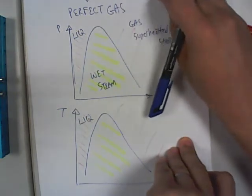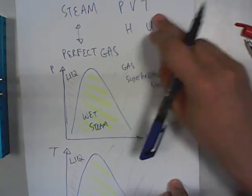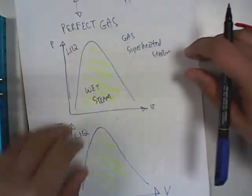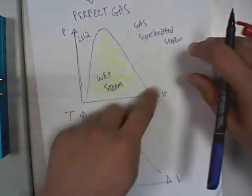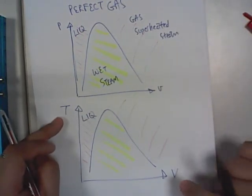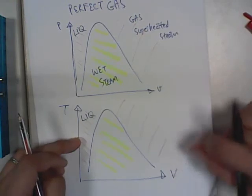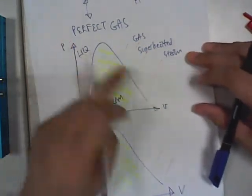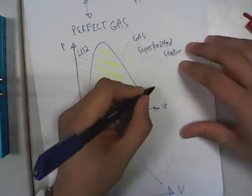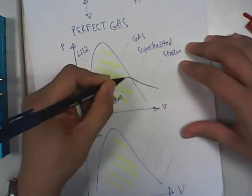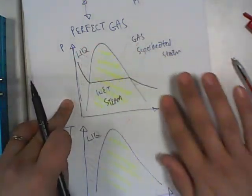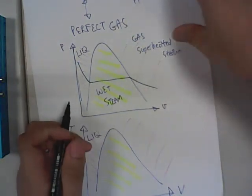For a perfect gas you have pressure, volume, and temperature. In the PV diagram, a constant temperature line looks like this — it's going down as volume increases. So along this line your temperature will not change.